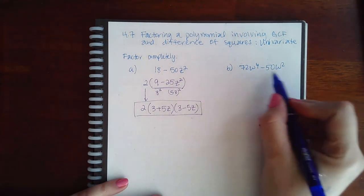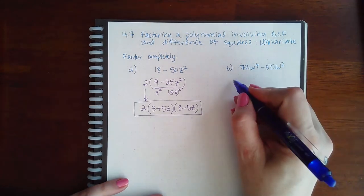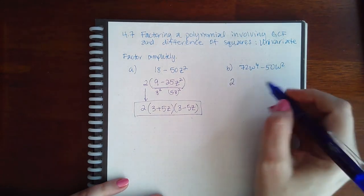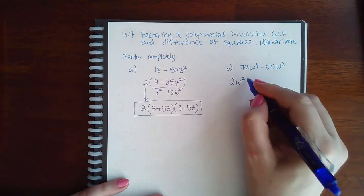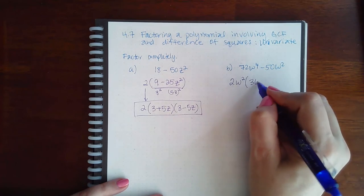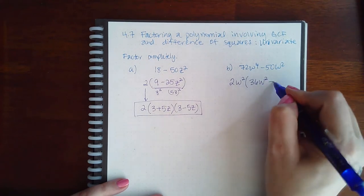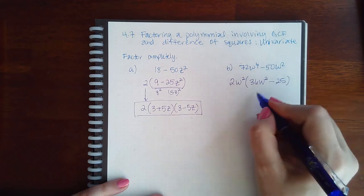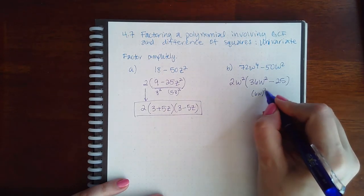Similarly here, both of these can be divided by, coincidentally, two again. They also have a w squared in common. So when I do that, I get 36w squared minus 25. This is a 6w that is being squared and this is a 5 that is being squared.